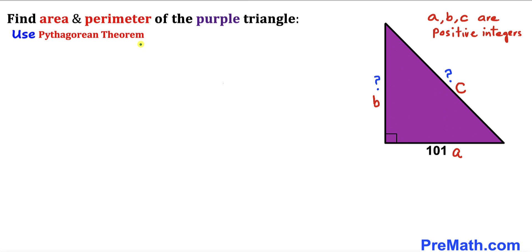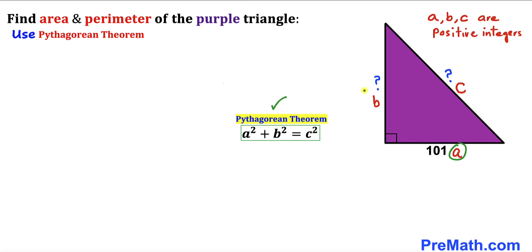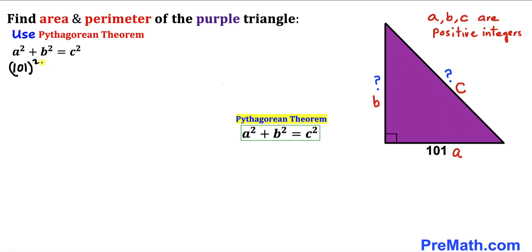Therefore we are going to use the Pythagorean theorem: a² + b² = c². In our case we have side lengths a, b, and c. So let's fill in the blanks — a equals 101, so this becomes 101² + b² = c².